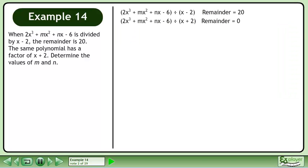Let's rewrite the information from the question. Since x plus 2 is a factor of the polynomial, the remainder is 0.